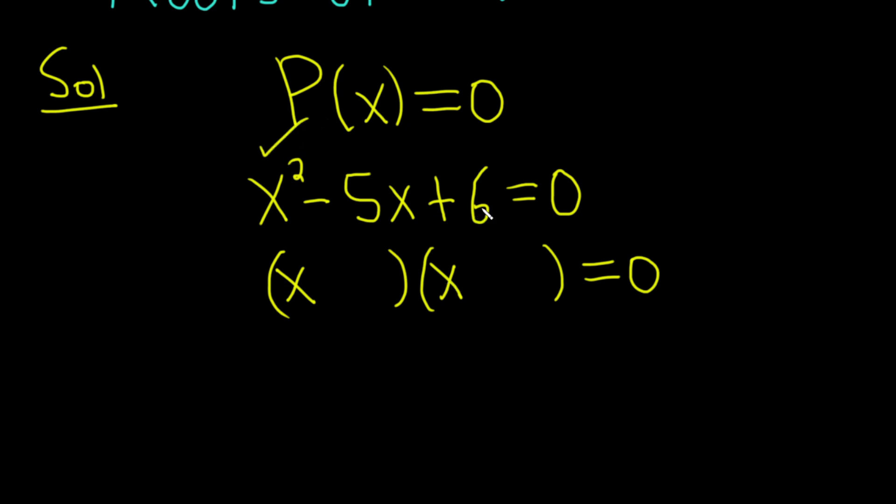We need two numbers that multiply to positive 6 and add to negative 5. So I think that's going to work out perfectly with these numbers here. Let's check.